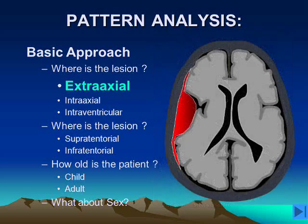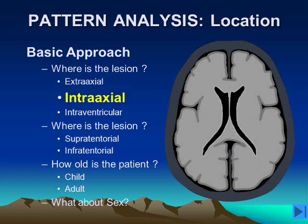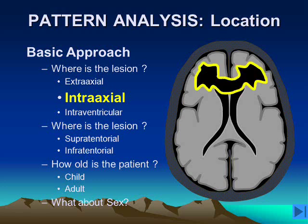When we have an extra-axial mass lesion, our differential diagnosis is different when compared to a lesion that is inside the substance of the brain. An intra-axial mass lesion may be located in the gray matter or the white matter, and in the cerebral hemispheres, the brainstem, or in the cerebellum. One classic intra-axial mass lesion is the so-called butterfly lesion, which involves the large commissural white matter tract that connects the two cerebral hemispheres together, the corpus callosum.